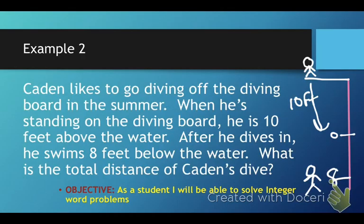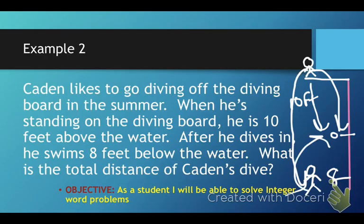Thing is, it wants to know, what is the total distance of Caden's dive? Well, the total distance of Caden's dive is from his spot on the diving board all the way to where he swims down below. So, if I take him, and he dives down, and he goes all the way down, we need to figure out how far he went. Well, remember, this is when we use absolute value. From the diving board to 0 is 10 feet. And from where he stops swimming, back up to the top of the pool, is 8 feet. What's the total of those two, 10 and 8? Well, that would be 18 feet. So his total distance of his dive is 18 feet. And that is when we use absolute value.